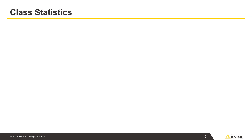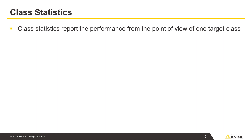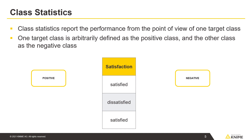Let's take a closer look. Class statistics report the performance from the point of view of one target class. One target class is arbitrarily defined as the positive class and the other class as the negative class. Here, we've defined Satisfied as the positive class and Dissatisfied as the negative class.